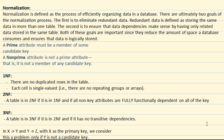There shouldn't be any unnecessary or repeated information stored in the table. A prime attribute must be a member of some candidate key — meaning a prime attribute is essentially any sort of key, be it a candidate key, primary key, or super key. A non-prime attribute is not a prime attribute; it is not any sort of key, it's just a normal attribute.